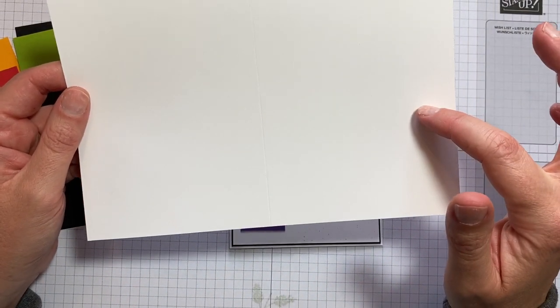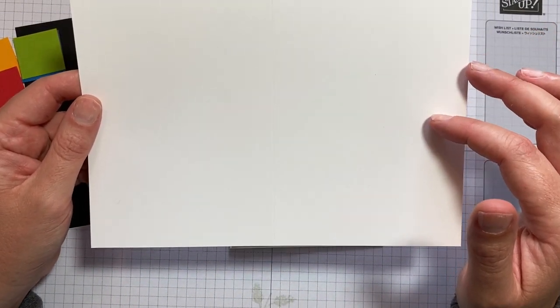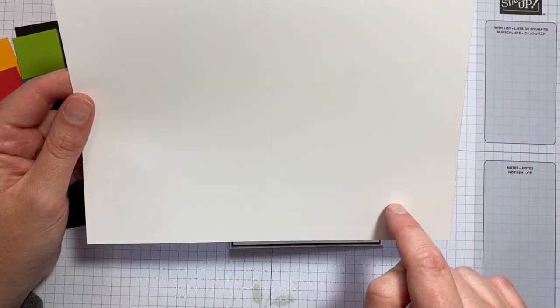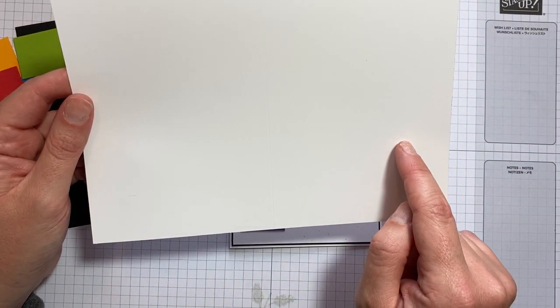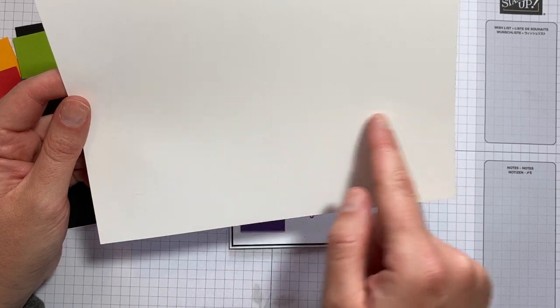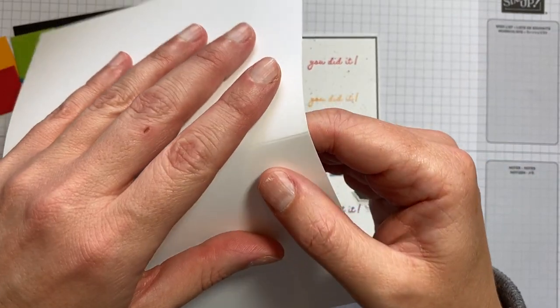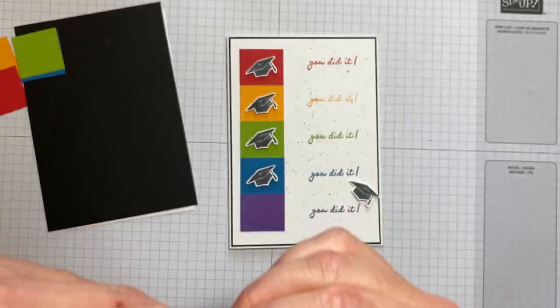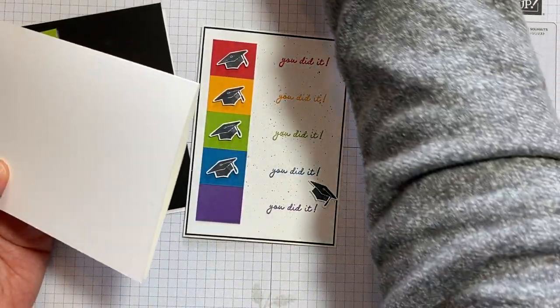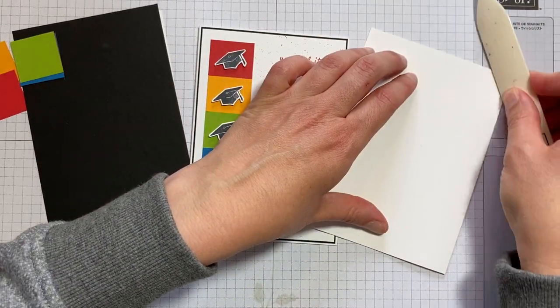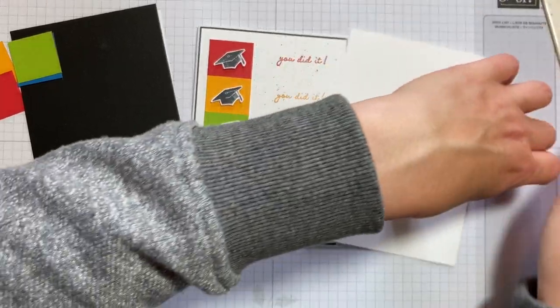Firstly, the card base is created from Whisper White Thick cardstock and this measures 14.9 by 21cm. I've scored it at 10.5cm along the long edge. We can fold and burnish that.